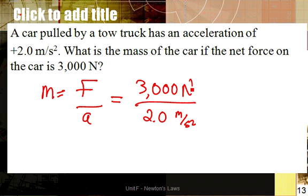What I like to do is show that the newtons is actually kilograms times meters per second squared, so they will cancel out. We know that if we take 3,000 divided by 2, we should end up with 1,500.